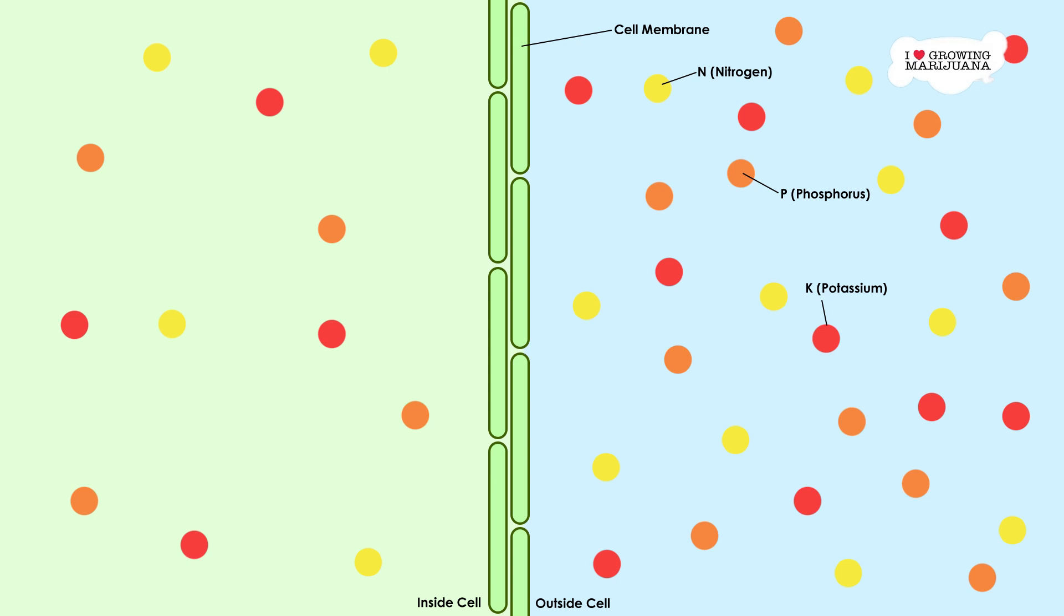Assuming the cannabis plant has already used some of the nitrogen ions, the plant's concentration is less than the concentration of the water outside. Because of the principle of osmosis, new nitrogen ions will be attracted to the inside of the plant from outside. When both sides of the cell wall are in equilibrium, meaning the plant has enough potassium ions, then these ions will stay put.